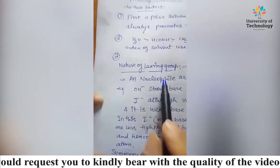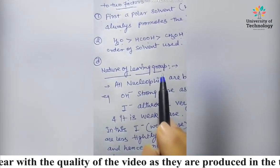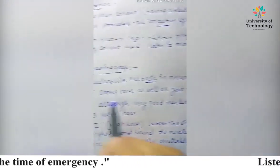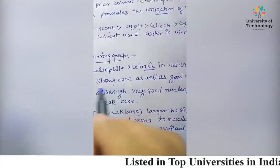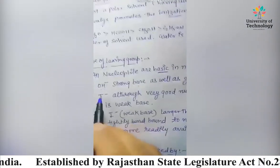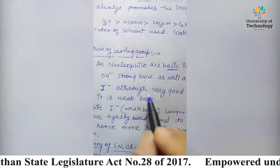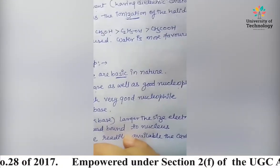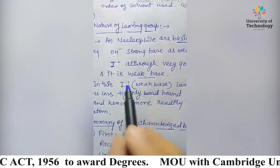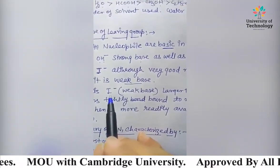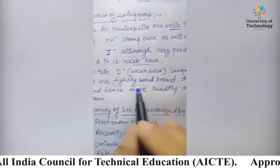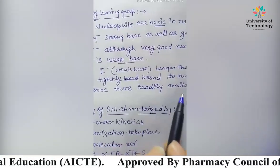The fourth point is the nature of the leaving group affecting nucleophilic substitution. All nucleophiles are basic in nature. Hydroxide is a strong base and a good nucleophile. Iodide attached to the carbon atom is a very good nucleophile but a weak base, because the larger the size, the less tightly electrons are bound to the nucleus, making them more readily available.